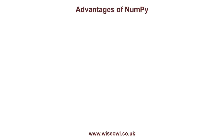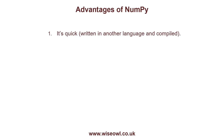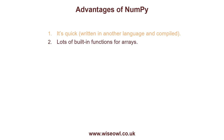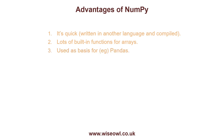Let's look at some advantages of NumPy. One of the advantages is it's quick — it's written in another language, probably C, and compiled. So unlike some other modules it should run very quickly. The second advantage is there are loads of built-in functions for doing things like transposing arrays and multiplying them together. A third advantage is it's used as a basis for other modules, such as Pandas. You shouldn't worry too much about this — if you're learning Pandas, you can use it without really understanding everything in this NumPy tutorial.